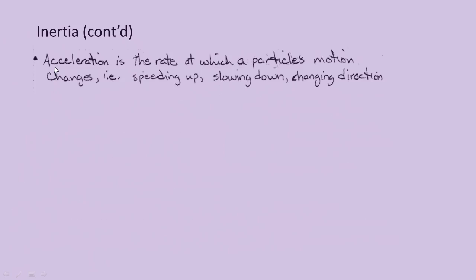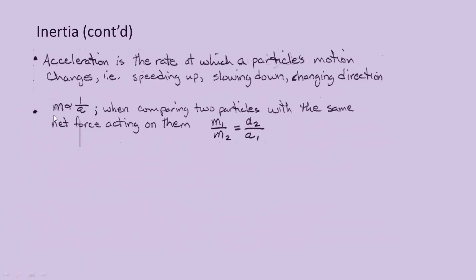Let's talk about how we measure the rate at which a particle's motion changes — we know that as acceleration. It requires a force to cause an acceleration. So if we're changing the state of motion — speeding up, slowing down, or changing direction — it requires acceleration. We know from our previous physics course that mass is inversely proportional to acceleration. So if we have two particles with the same net force acting on them, the particle with the heavier mass is going to have the slower acceleration. We can say that the mass of object 1 as a ratio to the mass of object 2 is inversely proportional to the ratio of their accelerations.